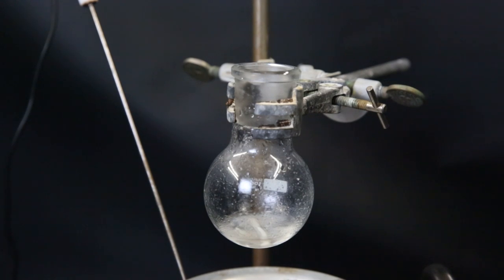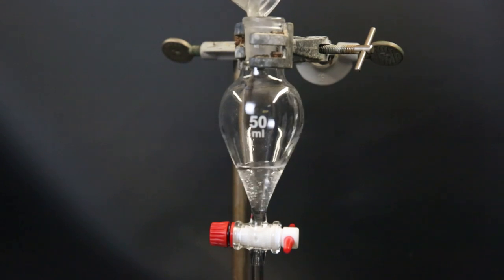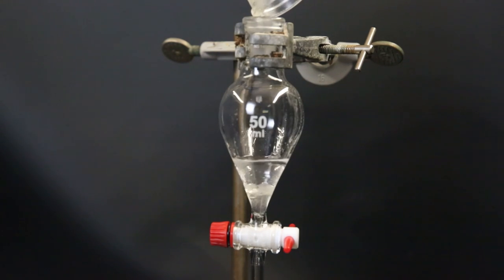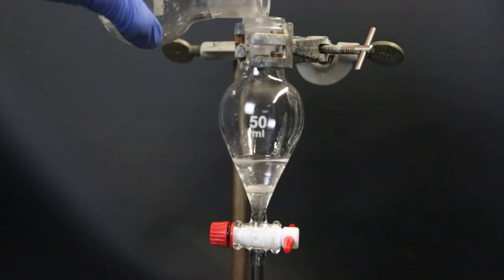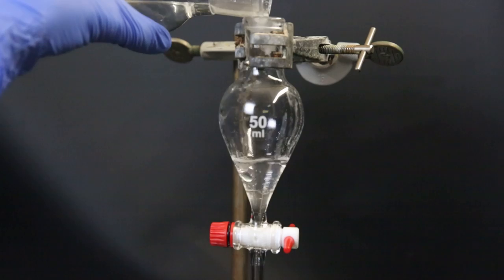Now the mixture has separated into two layers. I move it all to a separatory funnel and we can see the product sitting on the bottom. It still needs to be washed, so it can't simply be drained off. First, I add about 30ml of diethyl ether to take up the product.